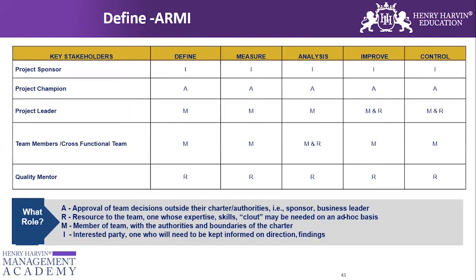Here are some shapes of a typical process map. I'm going to share a snapshot of how the ARMI tool looks. You can see the abbreviation of ARMI and the key stakeholders during the project: the project sponsor, project champion, project leader, team members from cross-functional teams, and the quality mentor. ARMI is captured from Define through Control, clearly indicating which stakeholder is utilized at which point. The quality mentor is a Resource — someone who helps the team with analysis, tools, and techniques.